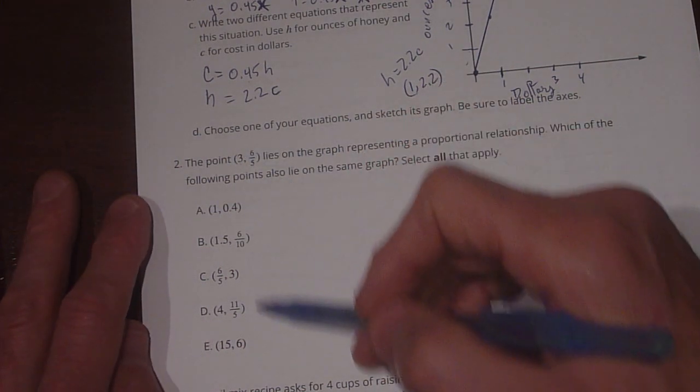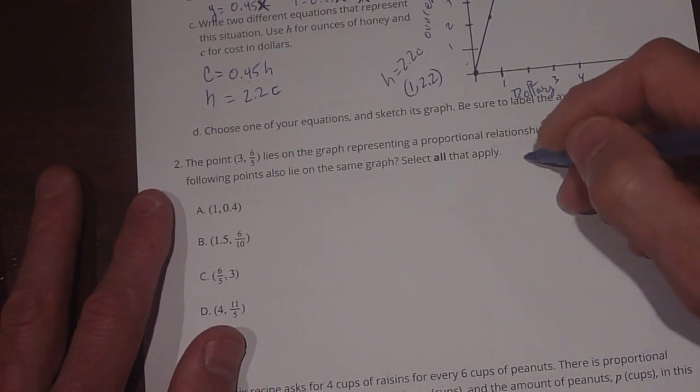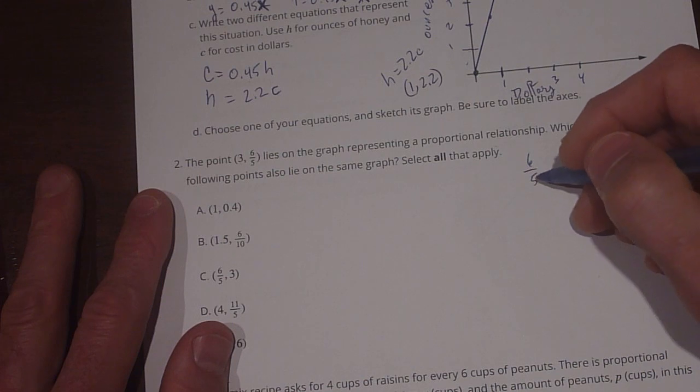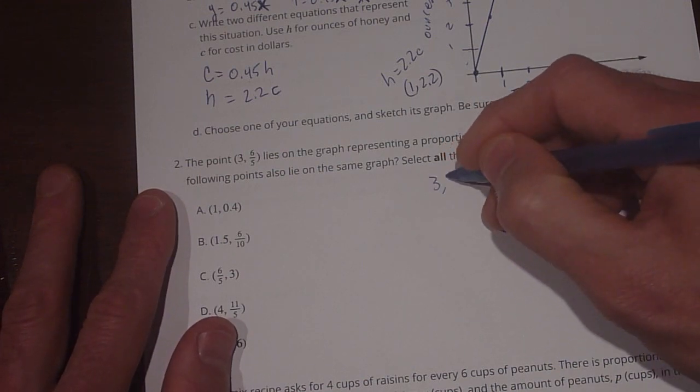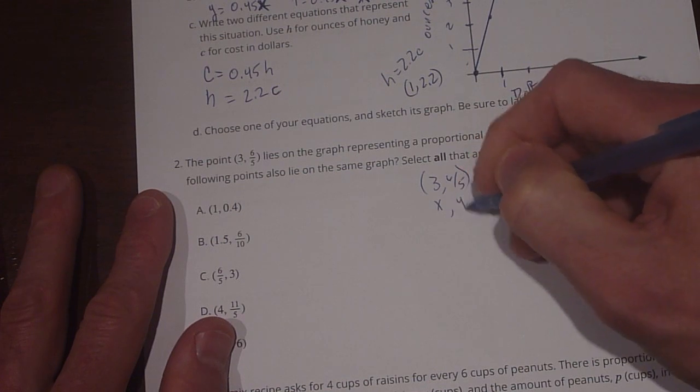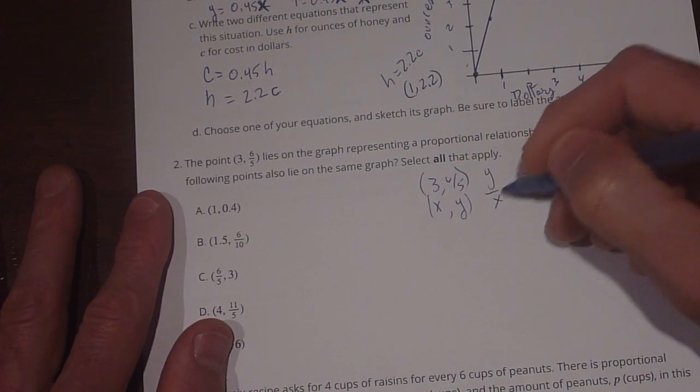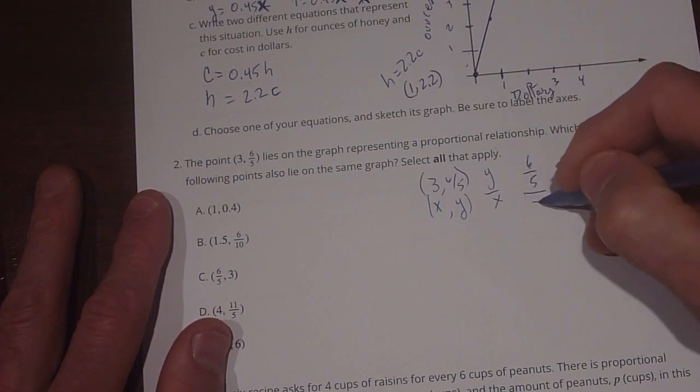And we can plug these points in here to see if they fit. So we're going to say 6 fifths is our y. Oh sorry, we have our 3, 6 fifths, and that's our x, y. And our constant of proportionality is going to be y over x.